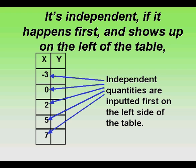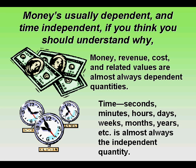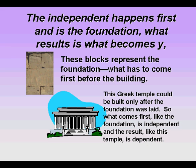It's independent if it happens first and shows up on the left of the table. And it's dependent if it's a result, and can be written as F of X or Y. Money's usually dependent and time independent, if you think you should understand one. Being independent happens first and is the foundation.